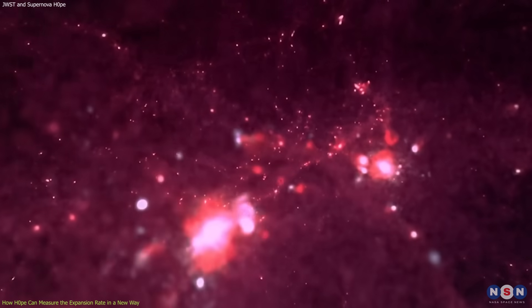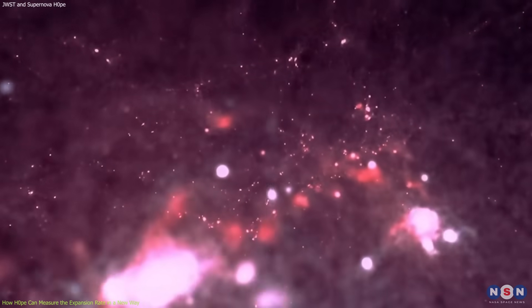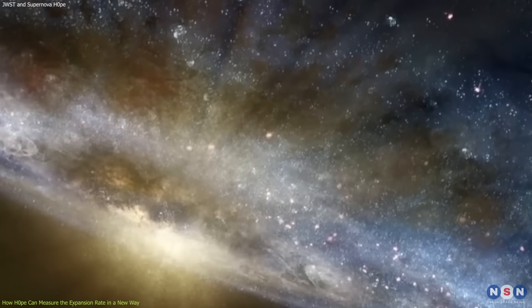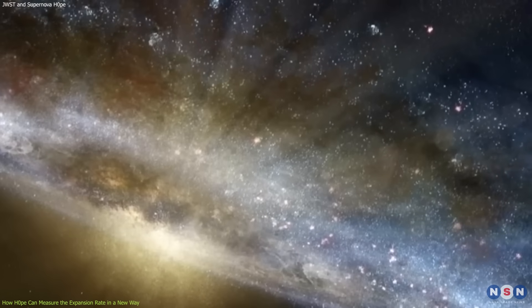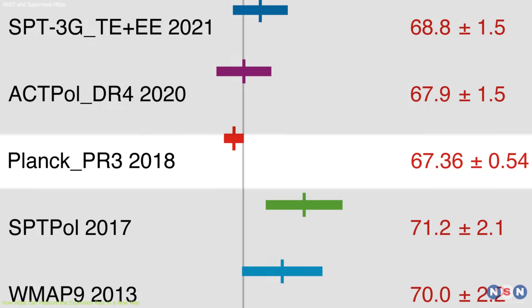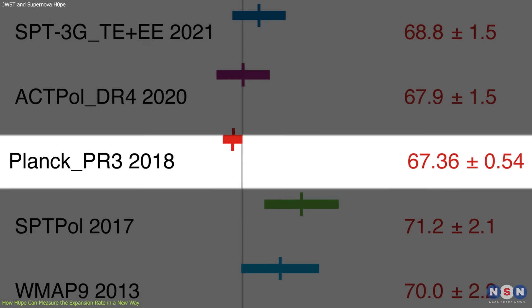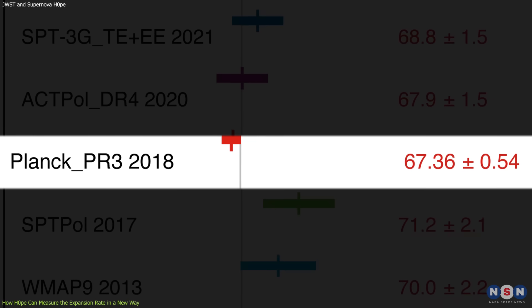By analyzing these fluctuations, we can infer the properties of the universe, such as its age, composition, geometry, and expansion rate.